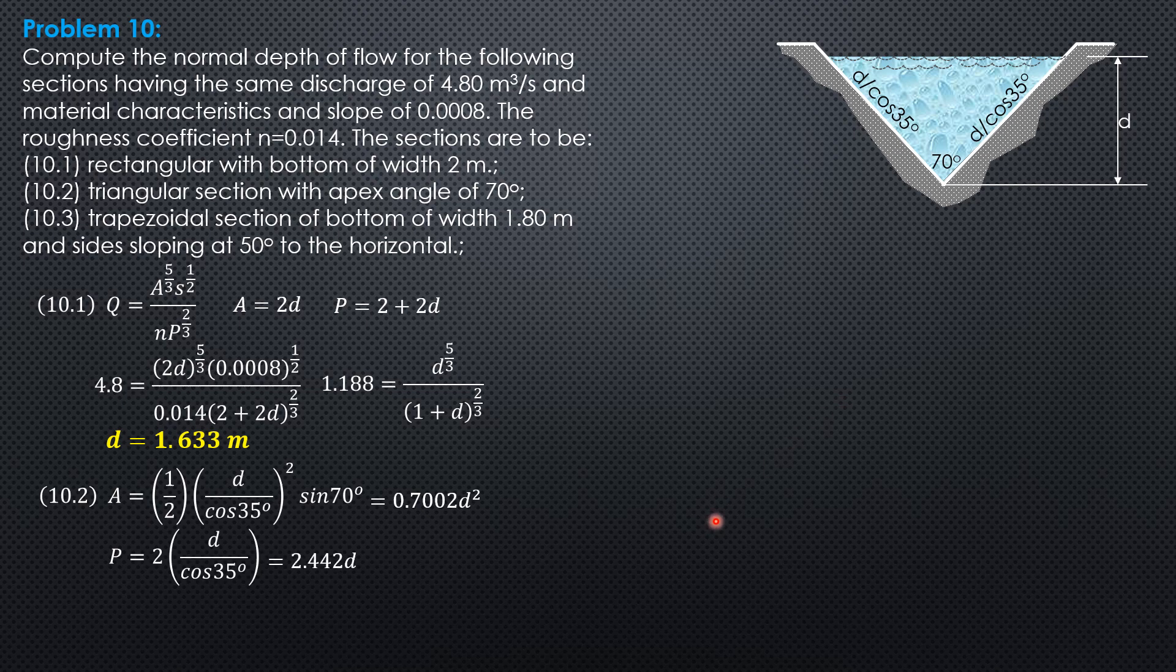While the wetted perimeter is simply 2 times D over cosine 35, in decimal 2.442 D. We substitute again into the formula: 4.8 equals 0.7002 D square to the 5 thirds times 0.008 to the 1 half over 0.014 times quantity 2.442 D to the 2 thirds.